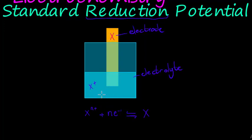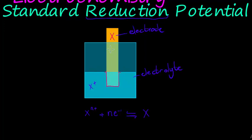As the cations float around in the solution, they are drawn towards the electrons and create more of this solid on the electrode. If the electrode is a gas — as we'll see with the hydrogen electrode — it will produce little gas bubbles at the electrode instead.